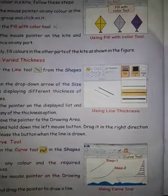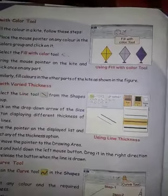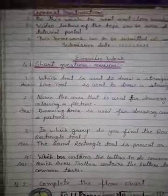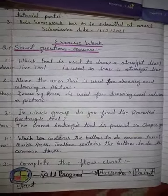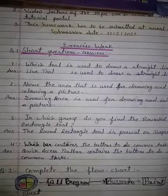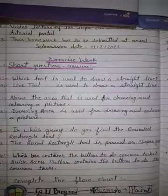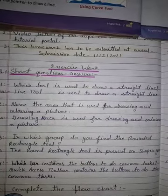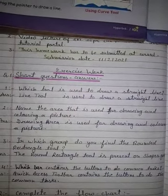Those are the important points of the chapter. Now I will explain the exercise work. We have short question answers. First: which tool is used to draw a straight line? You have to write the full answer line, not just one word.